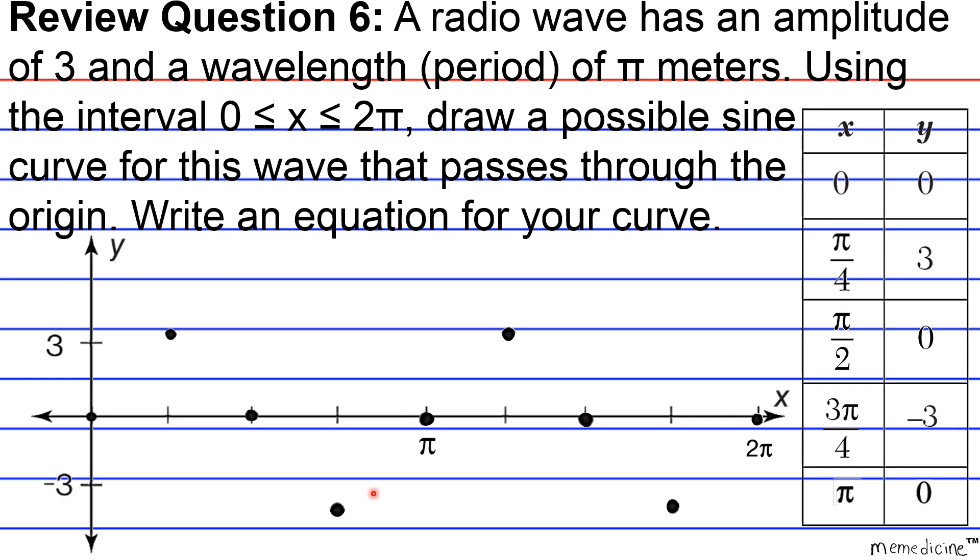Alright, that's not so bad. Now we're going to basically connect the points in a smooth curve, like so. And the equation will have to be in the form y = a sin(bx), where a is the amplitude and b is the frequency.